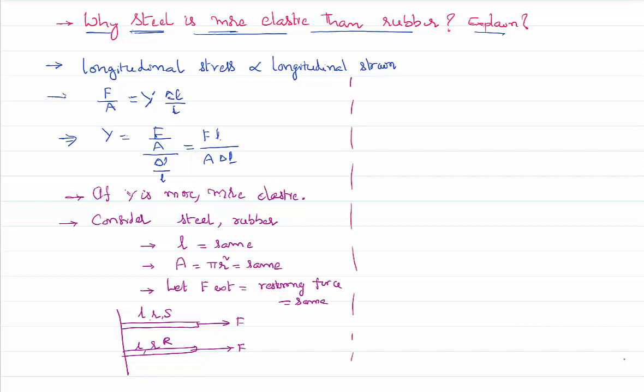I can write now Young's modulus as force into length by area into delta length. But the applied force is same, length is same, area of cross section is same. That implies Young's modulus of a material is inversely proportional to increase in the length of the wire. If a wire has increased more in length, its Young's modulus is less, it is less elastic, and vice versa.